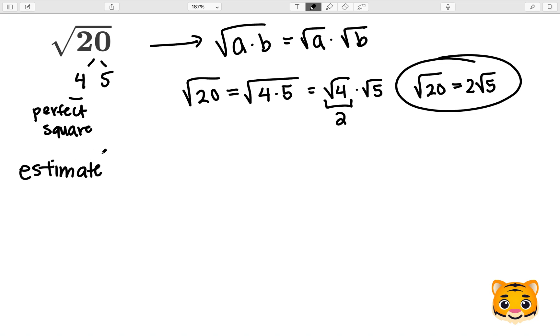However, if we want to estimate the square root of 20 to the nearest whole number, we can take a look at perfect squares nearby. Perfect squares nearby include 4 squared, which is 16, and 5 squared, which is 25. We can see that 20 lies between 16 and 25.